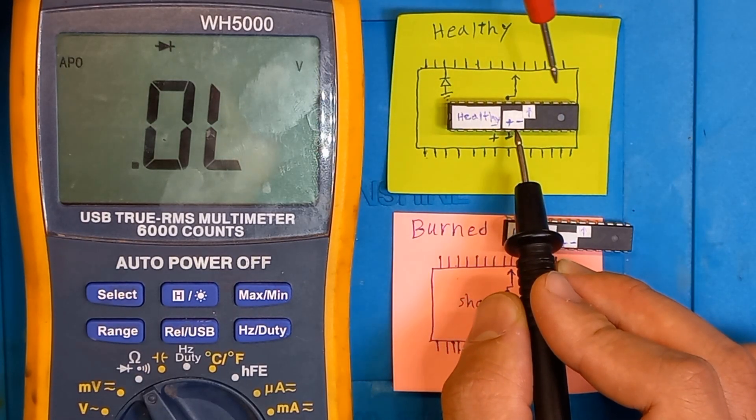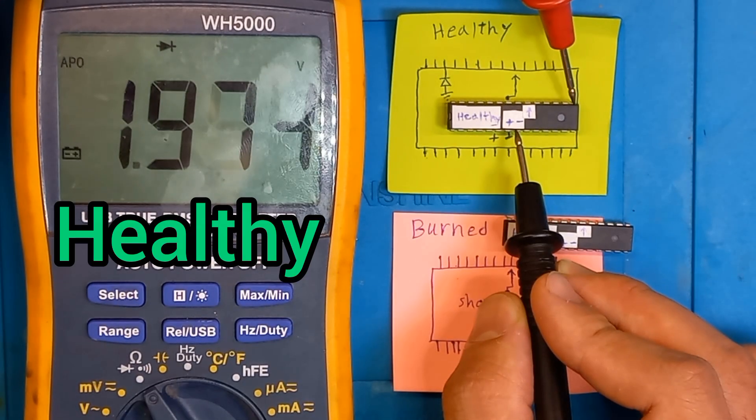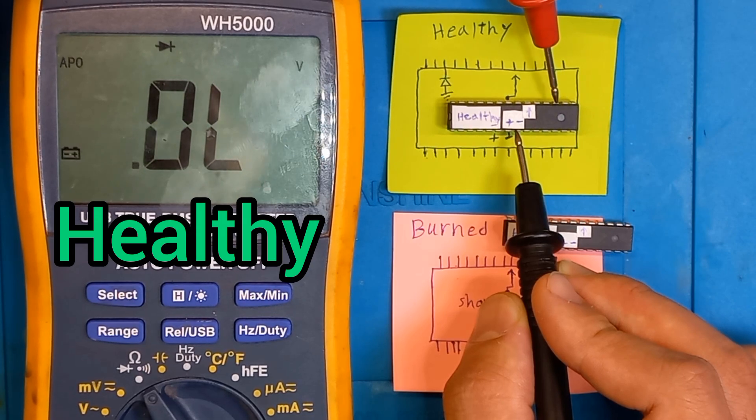Now, we need to find the negative pin of the IC, I've already identified it. Place the black probe on the negative pin of the IC, and then test all the other pins with the red probe. You should see a diode reading on the multimeter.